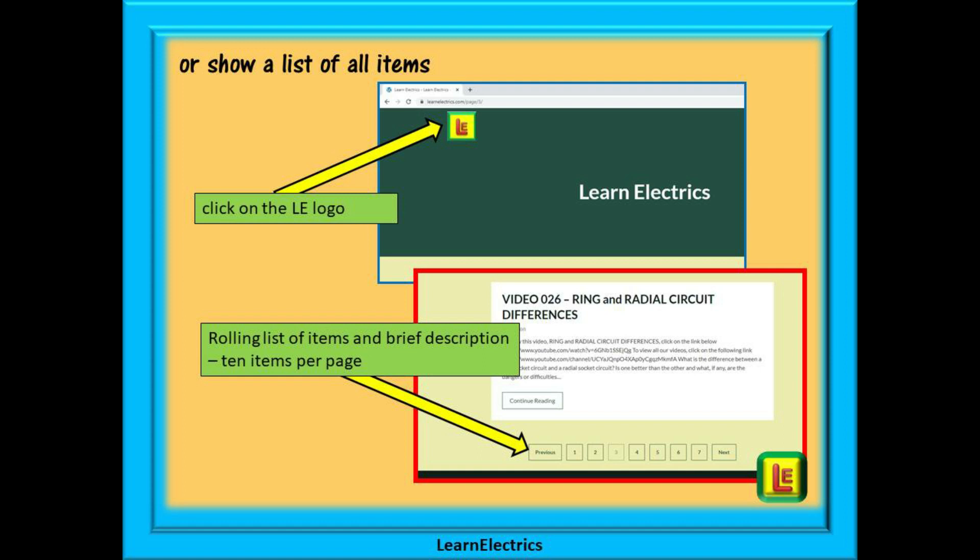There will be 10 items shown on each page, and at the bottom of each page is a page selector, page 2, page 3, 4 and so on. And these will bring up the next 10 items or videos in the list.